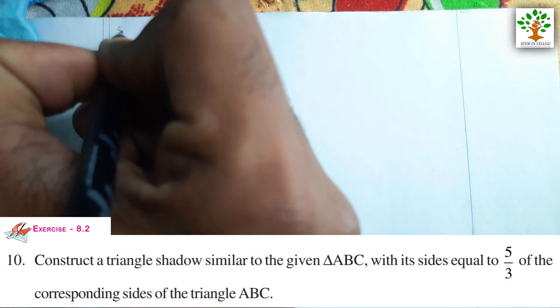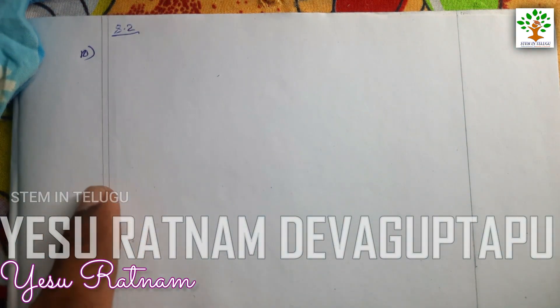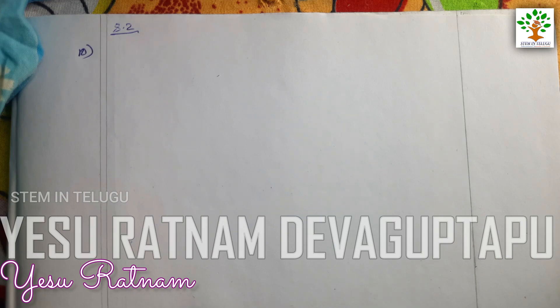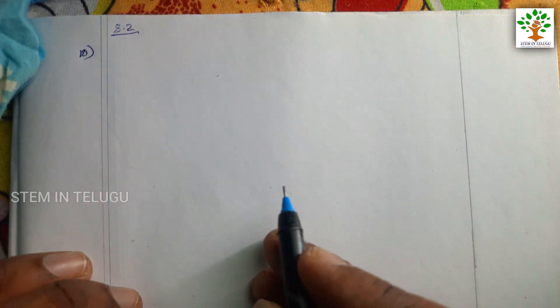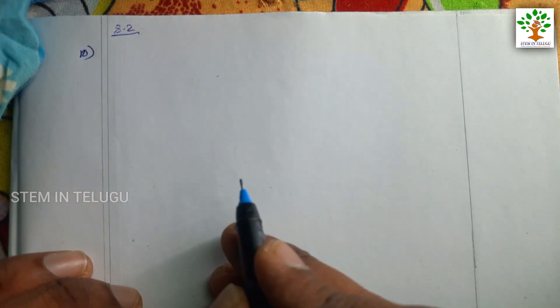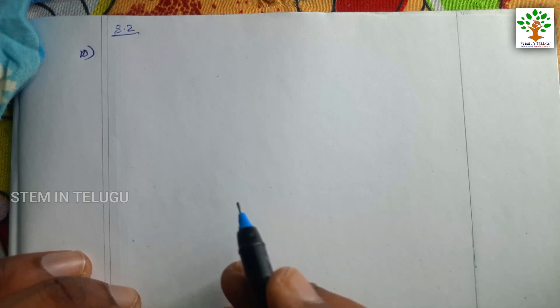Welcome students. In this video, we have the 10th sum of exercise 8.2, which is on page 211. The problem asks us to construct a triangle similar to the given triangle ABC, with its sides equal to 5/3 of the corresponding sides of triangle ABC. I will explain this in the video.